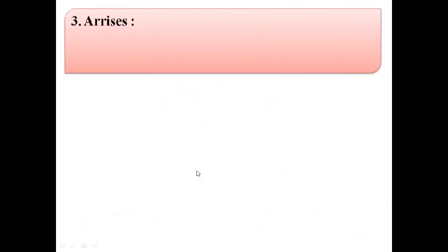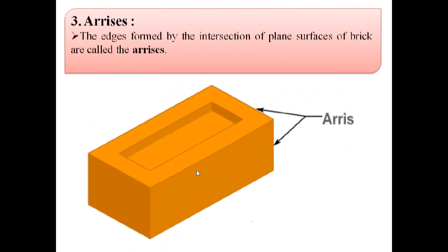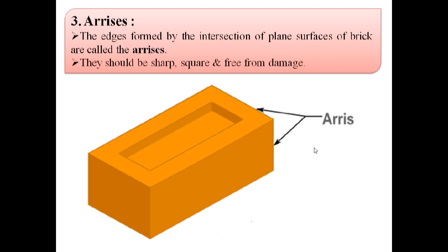The third term is arises. The edges formed by the intersection of plane surfaces of brick are called the arises. In this image we can see these are the edges formed by the intersection of plane surfaces of bricks — it is known as arises. These arises should be sharp, square and free from damage.